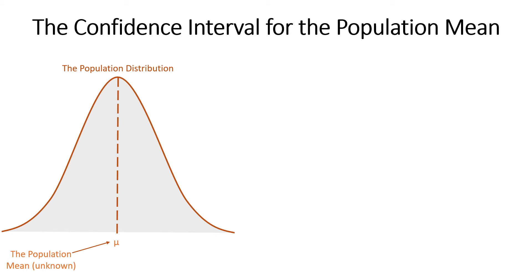Imagine here on the left you have a population distribution, and this population distribution has some population mean, although to us it's unknown right now. What we can do is take a sample and use that sample to create a confidence interval that captures the population mean. The way we do this is by using something called the distribution of sample means.